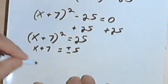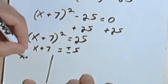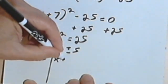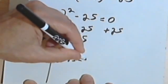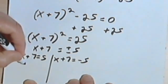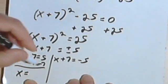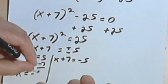Let's see if I can fit this in. So x plus 7 equals 5, or x plus 7 equals negative 5, subtract 7 from both sides. So I'm going to get x equals 5 minus 7 is negative 2.